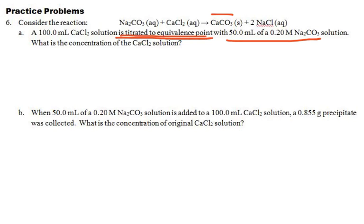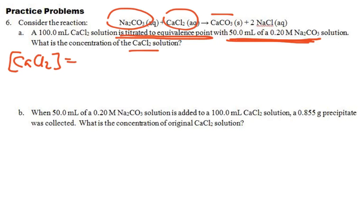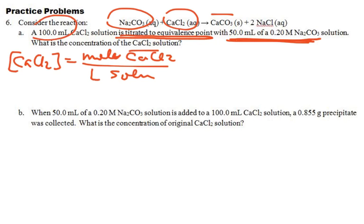So what does "titrated" mean? That means that if we were to add the sodium carbonate — add plenty of it — until we didn't get any difference in the calcium carbonate precipitate, that means this is the right amount of sodium carbonate in order to use up all of our calcium chloride. So what is the concentration of calcium chloride? The concentration of calcium chloride is going to be moles of calcium chloride divided by the liters of the solution. The calcium chloride solution is 100 milliliters, so we know the bottom part is going to be 0.1 liters. So if we can find the moles of calcium chloride divided by 0.1 liters, that will give us our concentration.